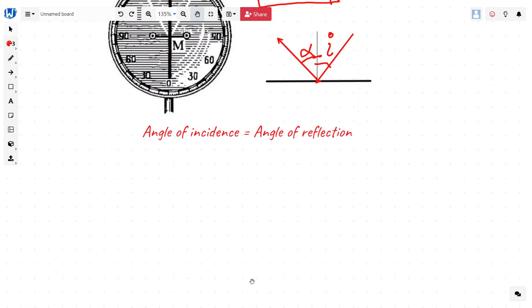Suppose we have a light ray. Suppose we have this mirror and the light ray is coming from this direction and getting reflected.